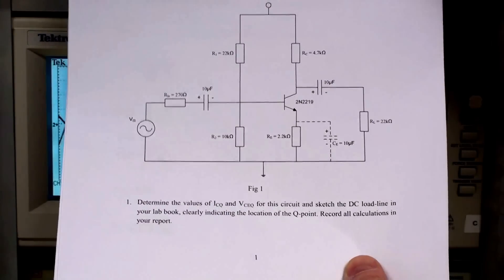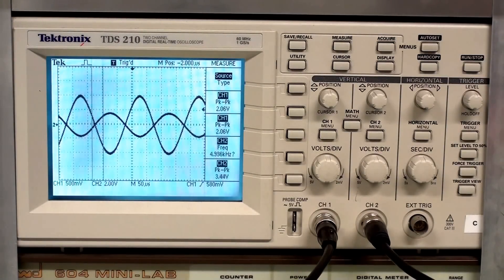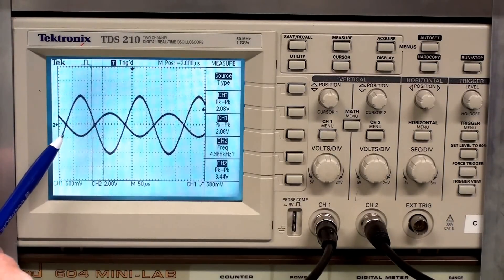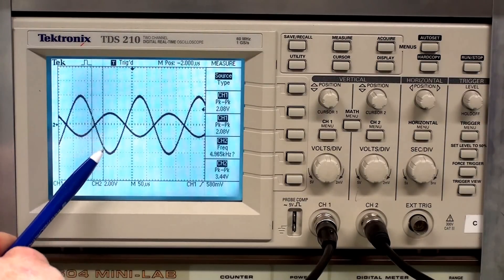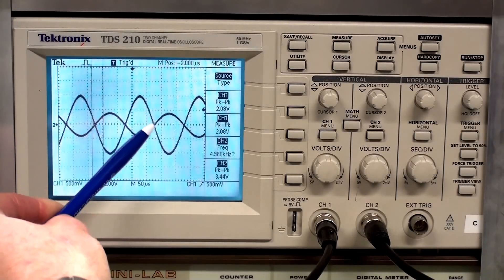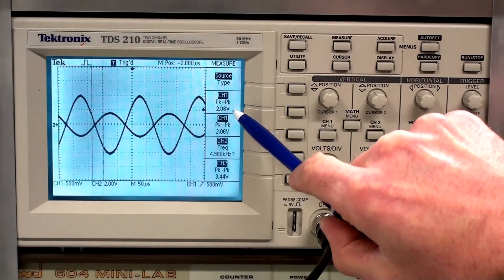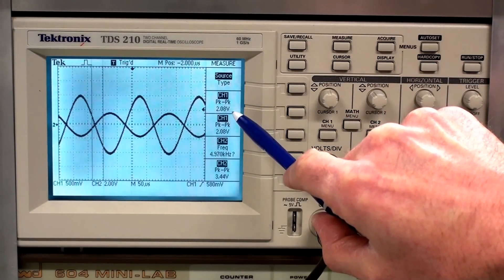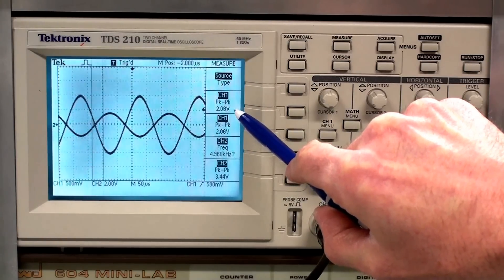When you connect up the circuit, what you should see on the oscilloscope is something like this. This trace here on the oscilloscope is the input, and that's on channel 1 of the scope. You can see here that it measures about 2 volts, or thereabouts, peak to peak.